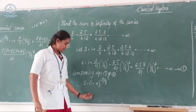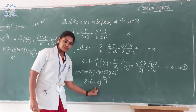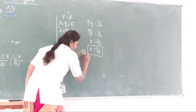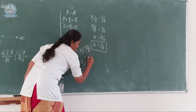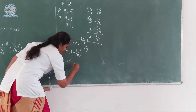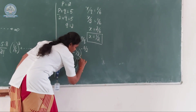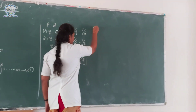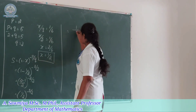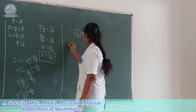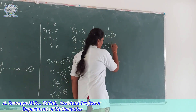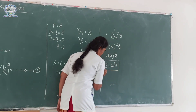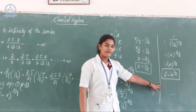Now we substitute the known values of x, p, and q into s equal to (1 minus x) whole power minus p by q. Substituting gives (1 minus 1 by 2) whole power minus 2 by 3. This becomes (1 by 2) whole power minus 2 by 3, which equals 1 divided by (1 by 2) to the power 2 by 3. Taking the reciprocal gives 2 to the power 2 by 3, which equals 4 to the power 1 by 3. Therefore s equal to 4 to the power 1 by 3.